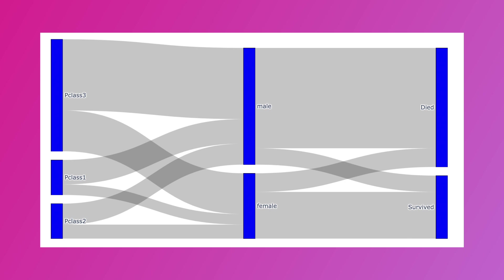The first thing is you have to start with a source, a destination, and you can have multiple other variables in between. You want a flow diagram that tells you from the destination what is the contribution of the source. For example, I want to figure out how many male passengers traveling in p-class 3 died — and this is where the Alluvial diagram comes into picture.